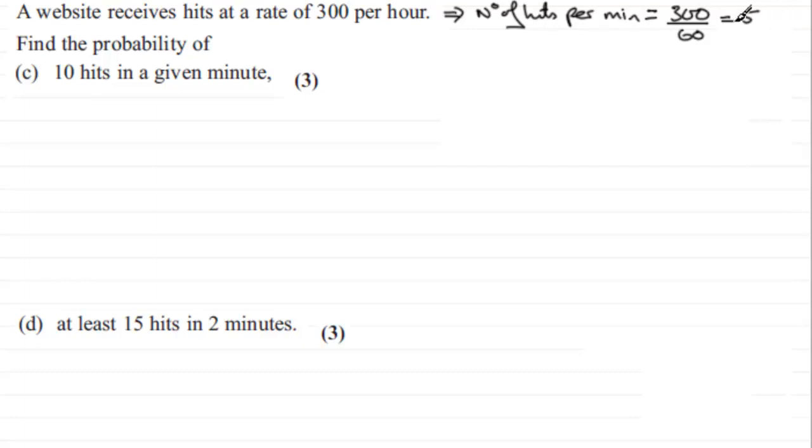So 5 hits per minute. That would be the mean rate that we can expect. Now the next thing I'd want to do is to define a random variable. Let's say we call it Big X. Let X be the random variable. Let's say RV for short for random variable. And it's going to represent the number of hits to the website per minute.